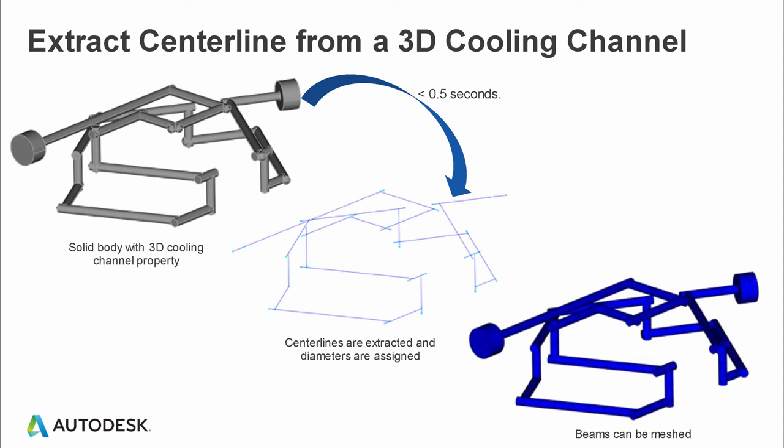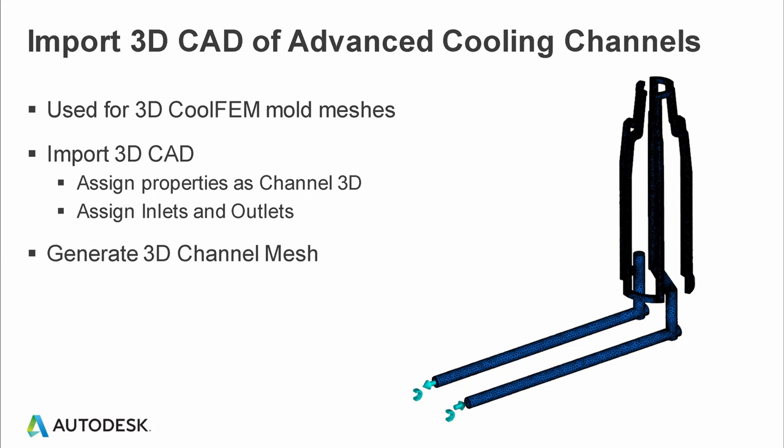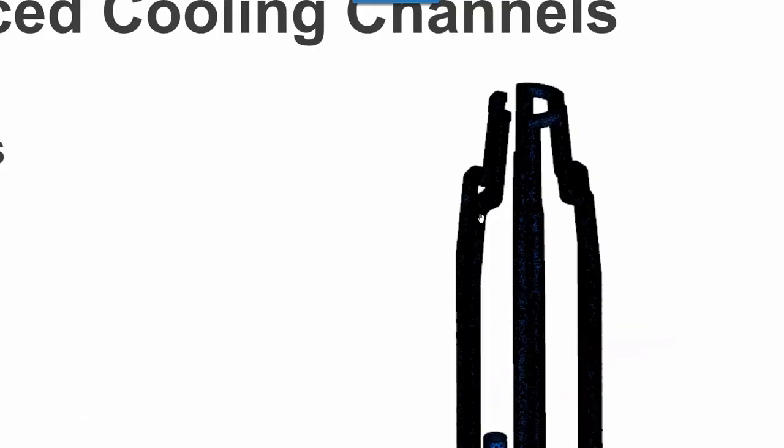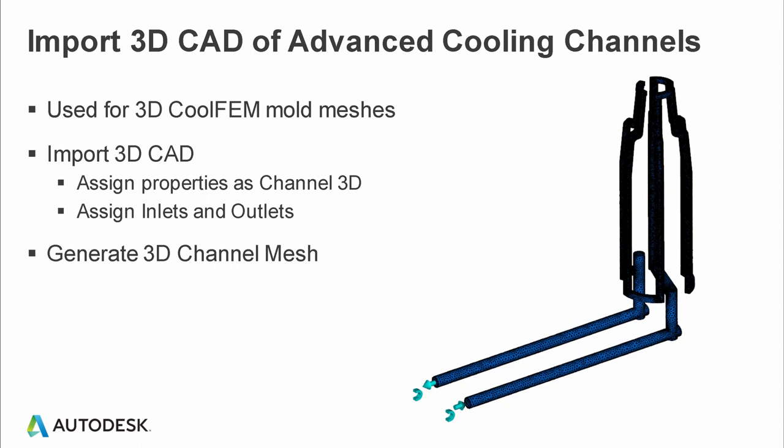This saves a lot of time in creating manual curves and assigning properties. Another way is to directly import the 3D channel as-is and mesh it. This is particularly recommended for advanced cooling — known as conformal cooling — where the cooling channel geometry is really complex and cannot be well represented with 1D elements. That would impact the accuracy of the cooling analysis. The complex features can be represented as 3D cooling channels using a tetrahedral mesh, and we can assign the properties as 3D channels to it.